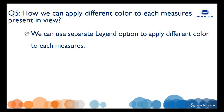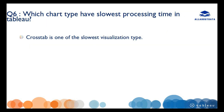Our next question is: how can we apply different colors to each measure present in the view? We can use the 'Measure Names' and 'Measure Values' separately-and option to apply different colors to each measure. If you want to know more about this, I have uploaded a video on how to use that option — I'll provide the link in the description box.